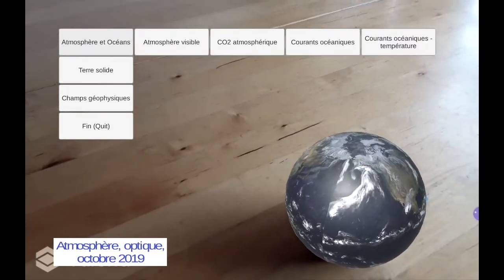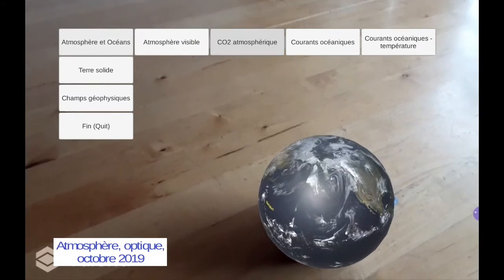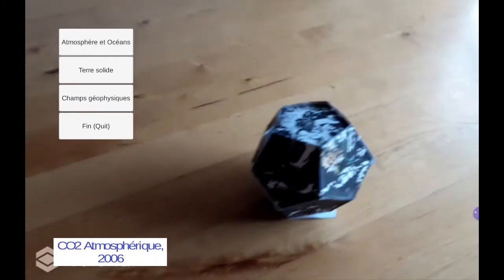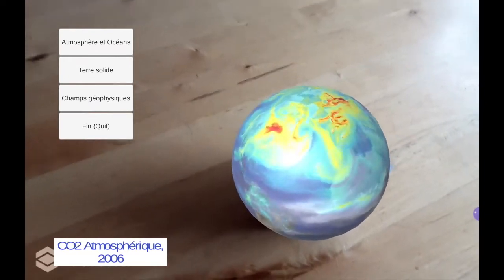Now you can rotate the Earth as you want to look at the part you are interested in. And there are other types of data.